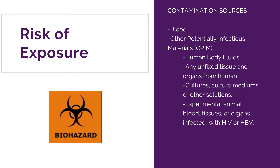Risk of exposure — contaminated sources include blood and other potentially infectious materials (OPIM), such as human body fluids, any unfixed tissue or organ from humans, cultures, culture mediums or other solutions, and experimental animal blood, tissues, or organs infected with HIV or HBV.